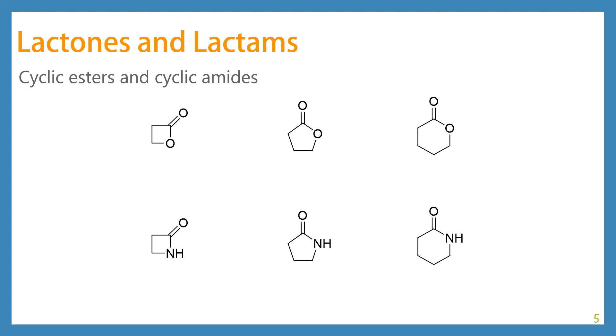So cyclic esters and cyclic amides have their own special name. A cyclic ester is called a lactone, and a cyclic amide is called a lactam. These are identified by the number of carbons between the carbonyl carbon and the oxygen of the ester. Starting at the carbonyl carbon, you move over to the adjacent carbon, and that is our alpha carbon. The next one is called the beta carbon.